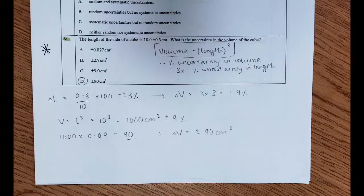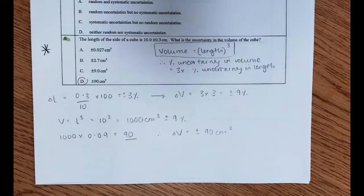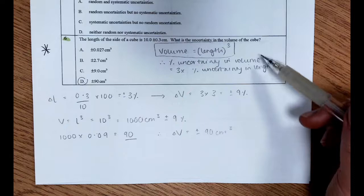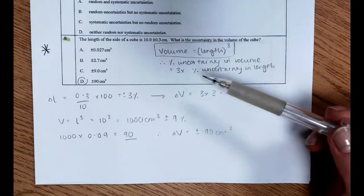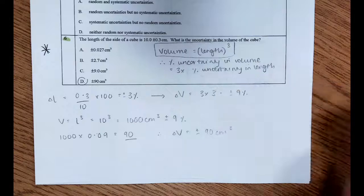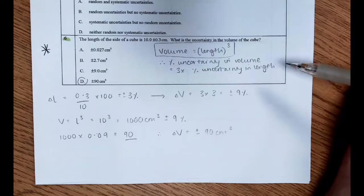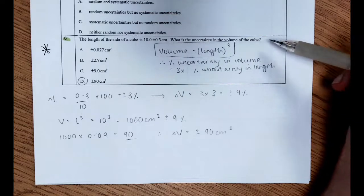Hi Year 12, the questions in this video are only from the SL end of year assessment, so these are not for HL students. Question 6 of the SL paper: the length of a side of a cube is 10 plus or minus 0.3 centimeters. What is the uncertainty in the volume of the cube?